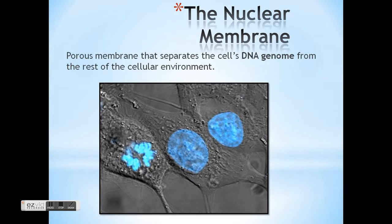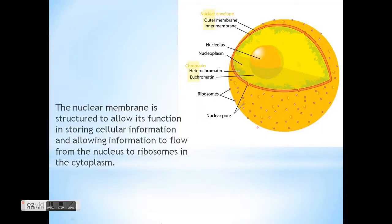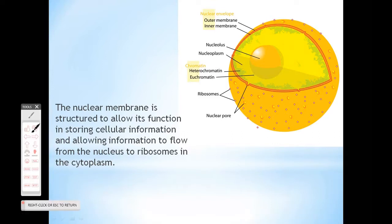The first thing we need to talk about is the nuclear membrane - the membrane that surrounds the nucleus. It is a porous membrane that separates the DNA genome from the rest of the cellular environment. It has to be porous so it can let certain materials in and out. Although it's important to keep DNA contained, we don't want it completely shut off from the rest of the cell. When we make RNA, that RNA has to be able to get in and out of the nucleus through little pores. Here you can see a depiction of that.